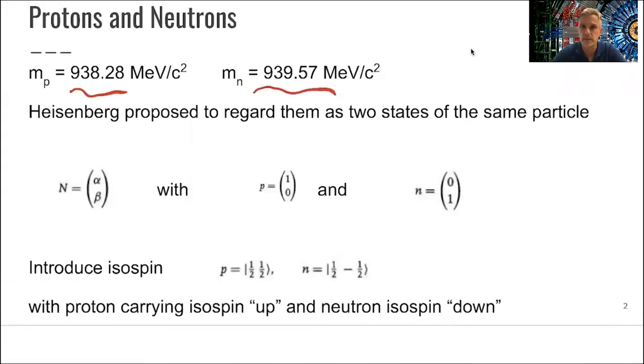So Heisenberg proposed, and that was in the 1930s, to regard them as two states of the same particle. They were really so similar that you could think that they are basically the same, just a rotation from one to the other. And that's exactly what he did. Heisenberg, considering them as one particle, a nucleon, where the proton is described as a duplet with an up duplet, and the neutron as a down duplet,